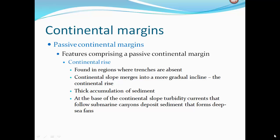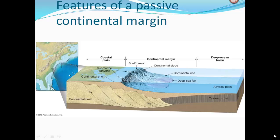The continental rise is found in regions where there is no trench. The continental slope merges into a more gradual incline — the continental rise — where there is a thick accumulation of sediment. At the base of the continental slope, turbidity currents following submarine canyons deposit sediment forming deep-sea fans. In the passive continental margin diagram, there's no plate boundary or deep-sea trench — we have the continental shelf, submarine canyons, deep-sea fans, continental slope, and continental rise that gradually transitions to the abyssal plain, which is part of the deep ocean basin.